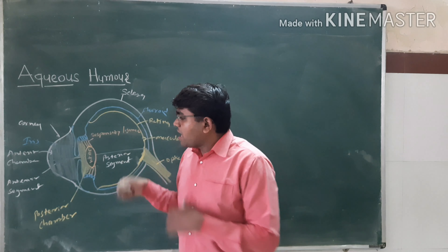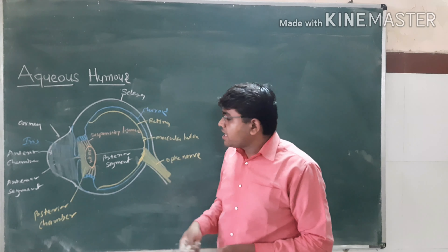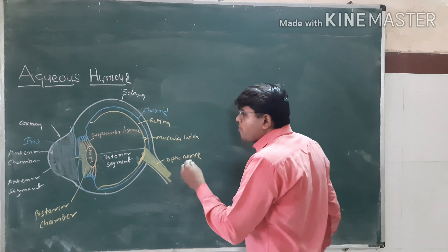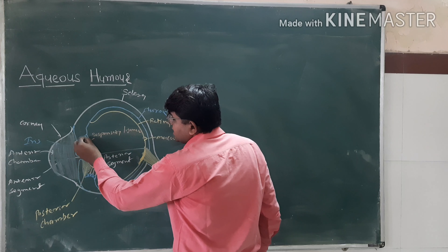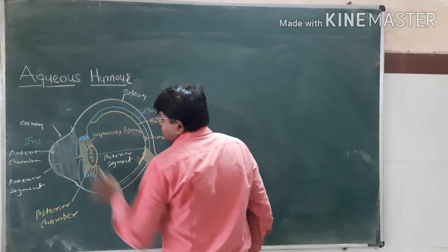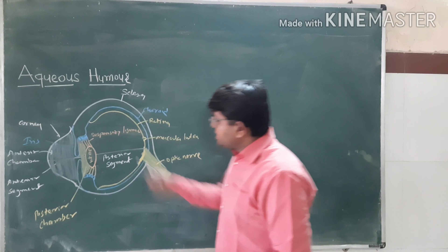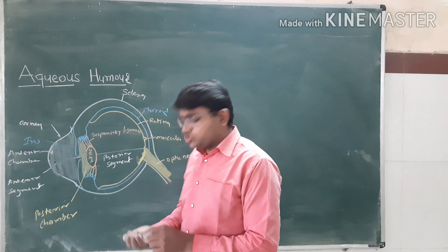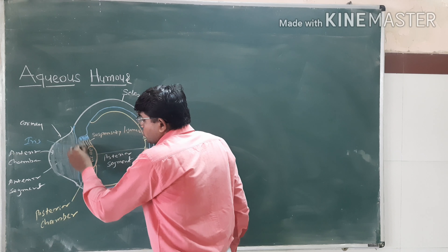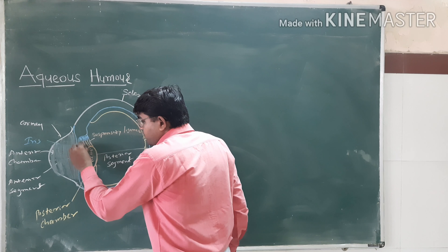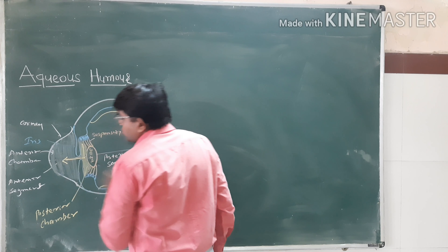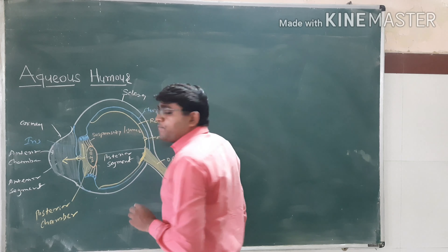How does the circulation of the aqueous humor occur? The aqueous humor is formed by the capillaries present in the ciliary processes — these are the ciliary processes. The capillaries in the ciliary processes produce the aqueous humor, and then it goes from this area into the posterior chamber. Then from the posterior chamber it goes to the anterior chamber through the opening known as the pupil.